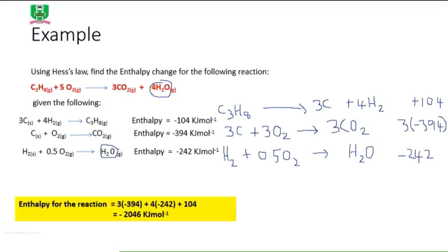In equation number three we have one mole of water being produced, but in the desired equation we need four moles of water. So we are going to multiply everything in the equation by four. Four times one mole of hydrogen gas gives four moles; four times 0.5 gives two moles of oxygen. We replace 0.5 with two. And one times four for the water molecules gives us four moles, which is the desired number.